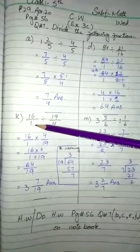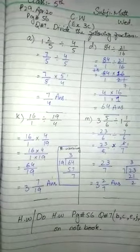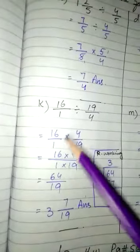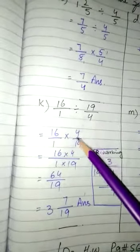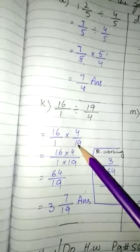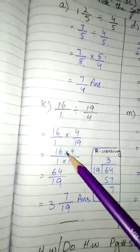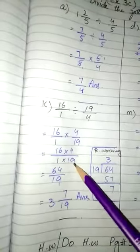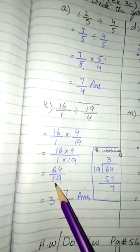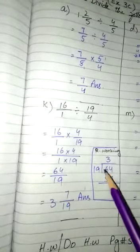Next is part k: 16/1 divided by 19/4. This becomes 16/1 multiply by 4/19. Now we have no cancellation. 16 multiplied by 4 is 64, and 1 multiplied by 19 is 19. So we have 64/19. Now we will convert this to mixed number.